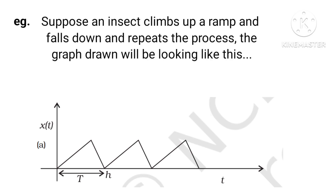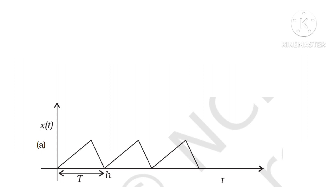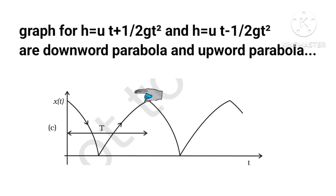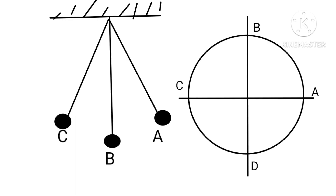Suppose an insect climbs up a ramp and falls down and repeats the process — the graph drawn will look like a sawtooth. When we play a game of a bouncing ball between the palm and ground, the graph will look like parabolas: h equals ut plus one-half gt² (upward parabola) and h equals ut minus one-half gt² (downward parabola). Similarly, oscillatory motion of a bob can be mapped to circular motion arcs across four quadrants.